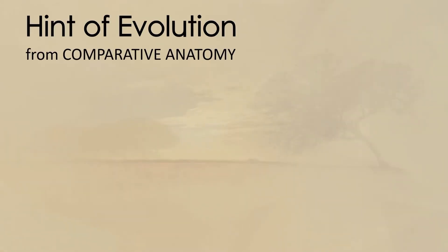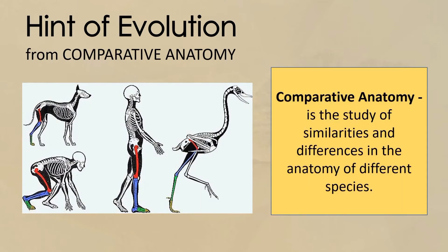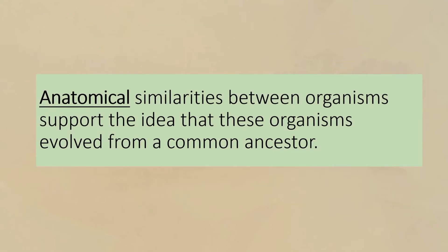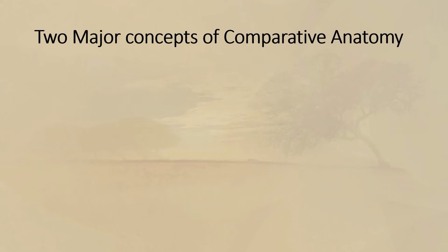One hint of evolutionary concept is from comparative anatomy. Comparative anatomy is the study of similarities and differences in the anatomy of different species. It is an important tool that helps determine the relationships between organisms and whether or not they share common ancestors. Anatomical similarities between organisms support the idea that these organisms evolved from common ancestors. There are two major concepts of comparative anatomy.